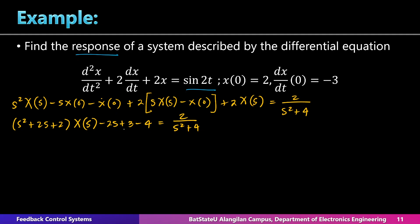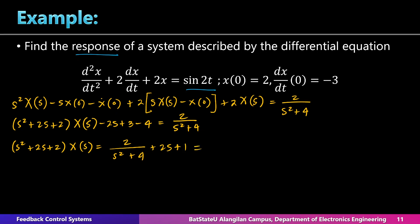Imposing the initial conditions where X(0) = 2 and X'(0) = −3, we get: (s² + 2s + 2)·X(s) − 2s + 3 − 4 = 2/(s² + 4). Simplifying: (s² + 2s + 2)·X(s) = 2/(s² + 4) + 2s − 1. Using a common denominator of s² + 4, we combine the right-hand side to get: (2s³ + s² + 8s + 6) / (s² + 4).